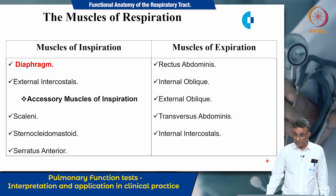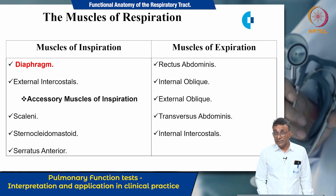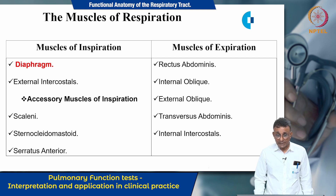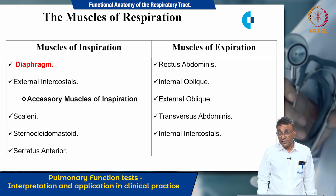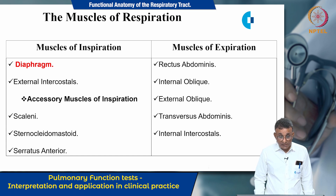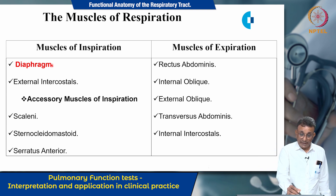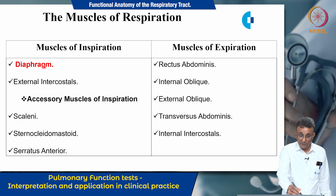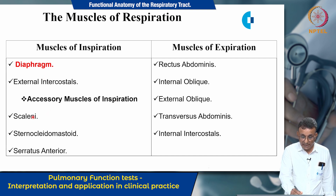Coming to the muscles of respiration: each respiratory cycle consists of an inspiration followed by an expiration, with 14 to 18 such cycles per minute. Inspiration is an active phenomenon requiring muscular effort. The principal muscle of inspiration is the diaphragm, supported by accessory muscles including the external intercostals, scaleni, sternocleidomastoid, and serratus anterior.